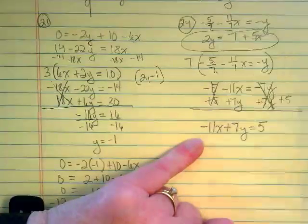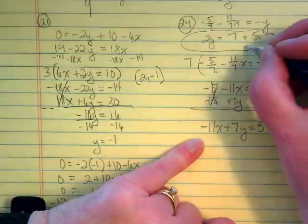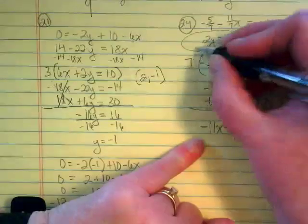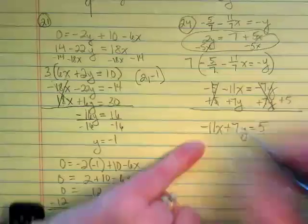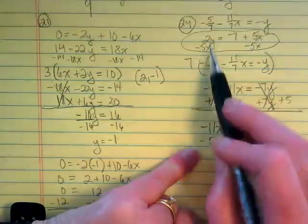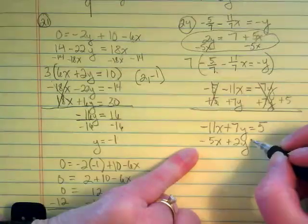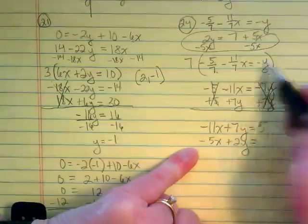That takes us back to the second equation in the system, which is also not in the right order. But the only thing out of place is this negative 5x. So we're going to move it to the other side. And we're going to rewrite this as negative 5x plus 2y equals 7.